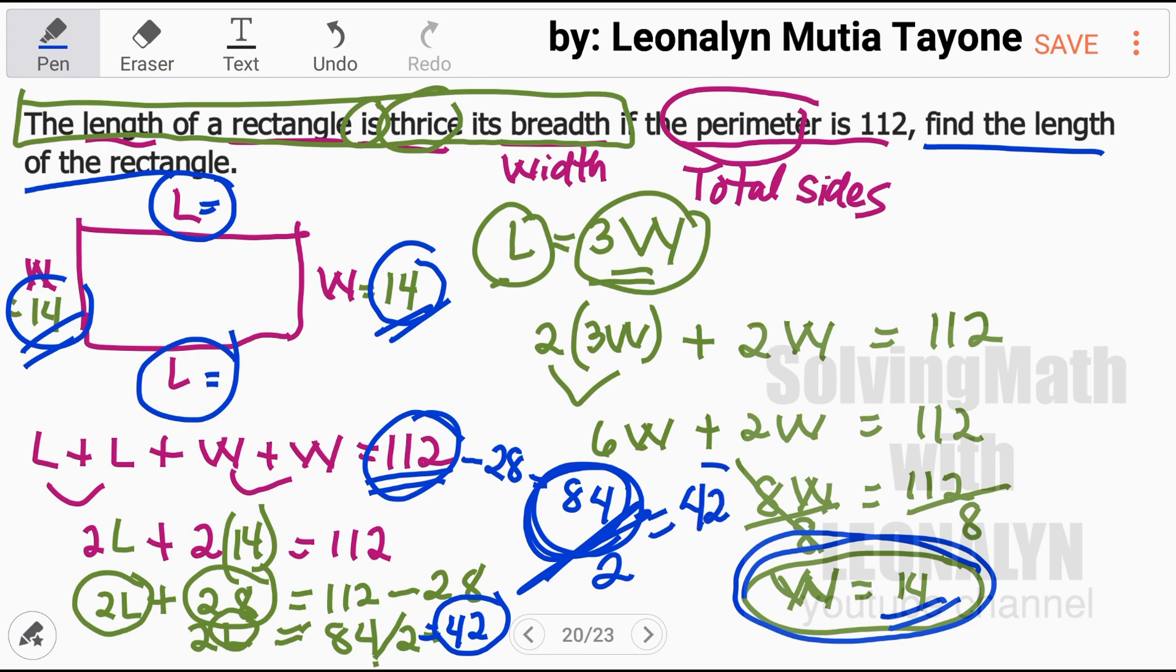This 84, divide it between the two lengths here. So 84 divided by 2, that is 42. So the length is 42.